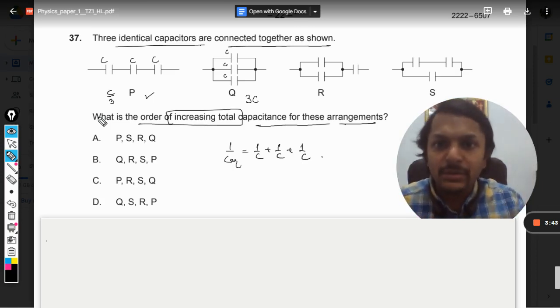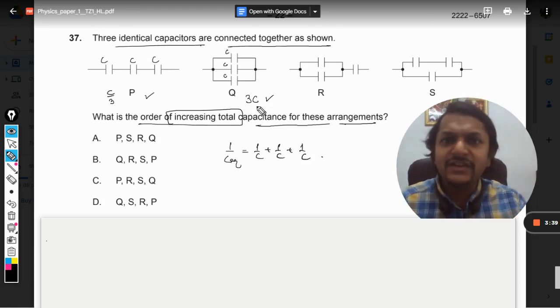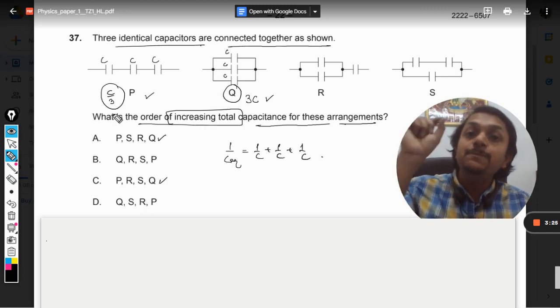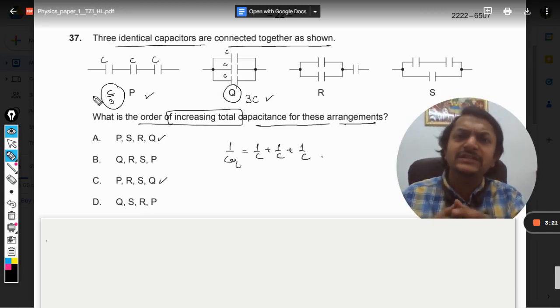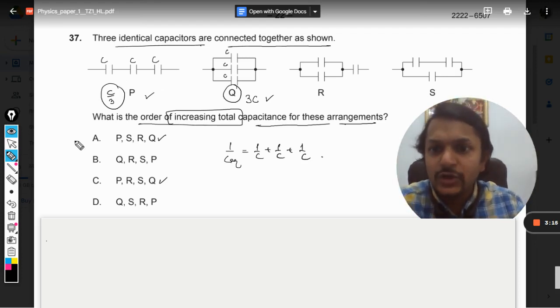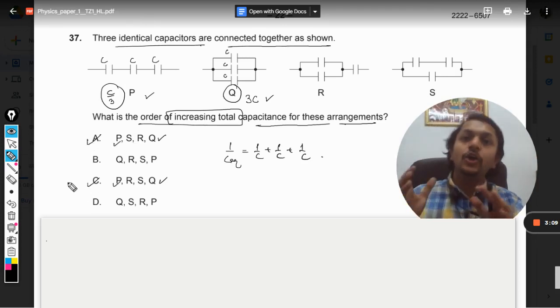Now there is one more thing we must remember. Whenever we use this combination, the parallel formula gives us the maximum value of equivalent capacitance possible, so Q should come at the end. And series gives the minimum value. As a principle, whenever capacitors are connected in series they give you the minimum possible value, so P is going to be the minimum. So our answer is between A or C.